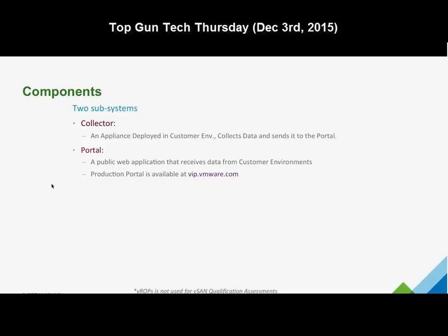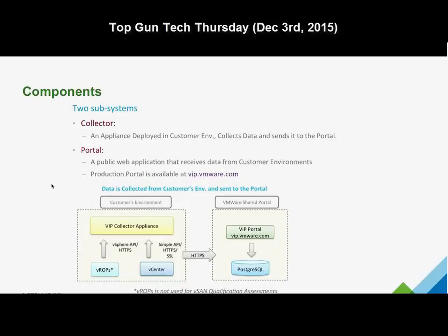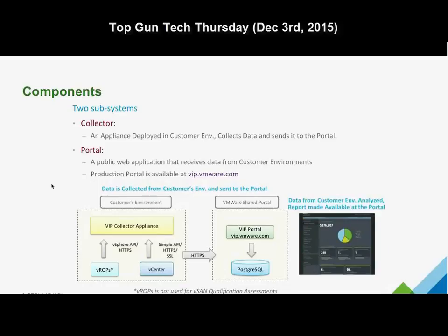The assessment tool really has two components: the collector and the portal. The collector is a virtual appliance deployed in the customer's environment to collect data. That data is then forwarded to the portal over a secure HTTPS connection. The portal is a web application on VMware's side that receives data from the customer's collector, stores it, and analyzes it. We then take that data, present it back to the customer, and provide associated reports.